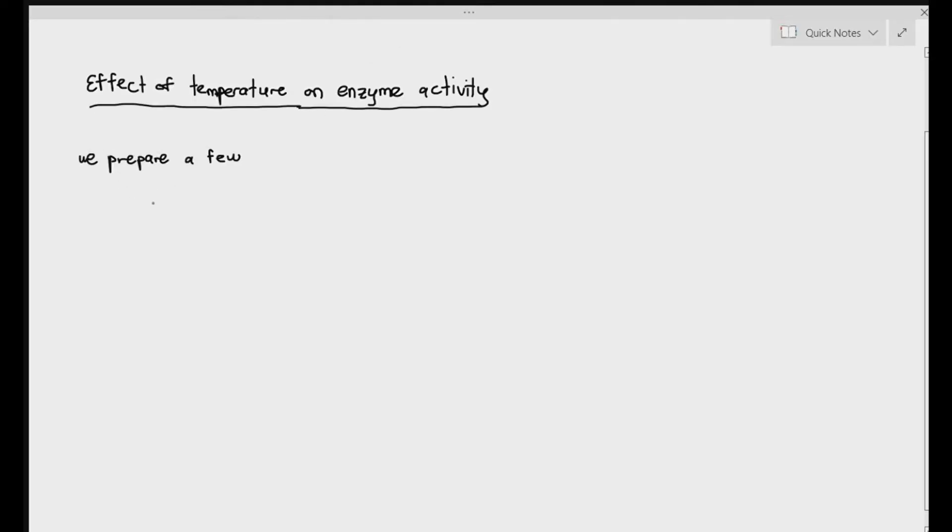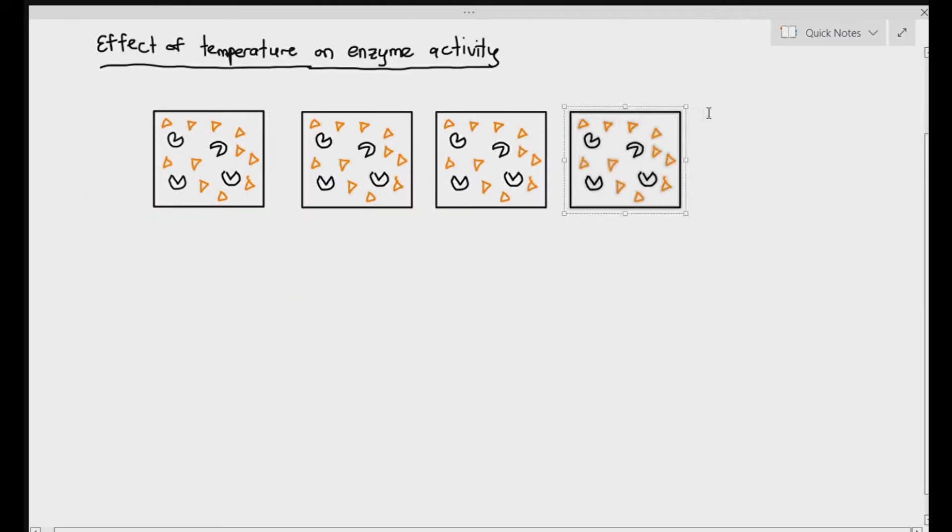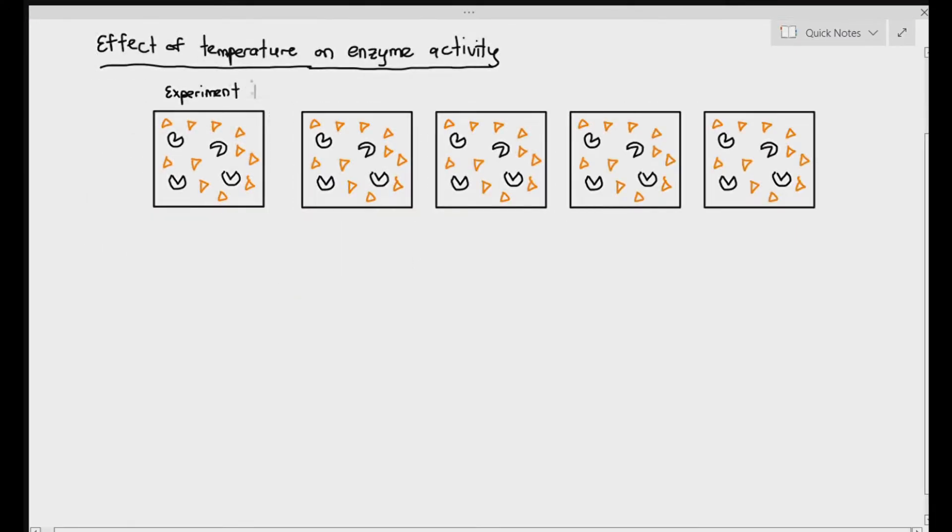We prepare a few experiments as follows. I've prepared five experiments as you can see here. The five experiments will all have the same concentration of enzymes, which I've represented in the Pac-Man, and also the same concentration of substrates, which I have represented in the orange triangles. In this case, the only difference is for each experiment, the temperature that the experiment is being conducted will be different.